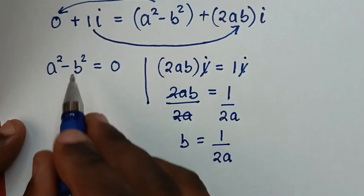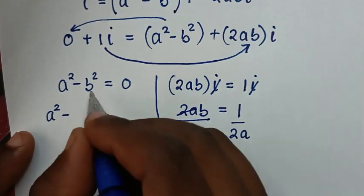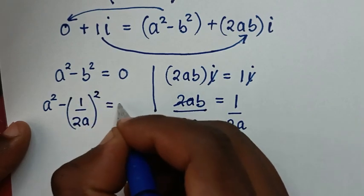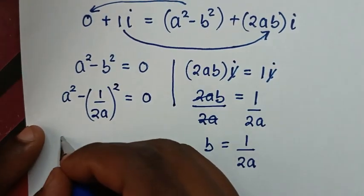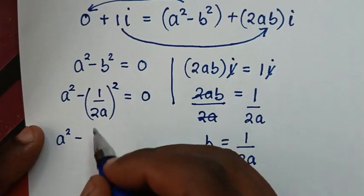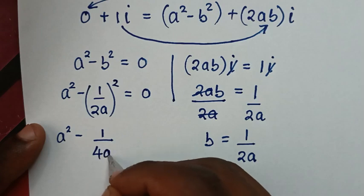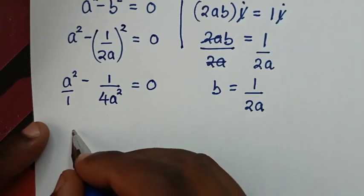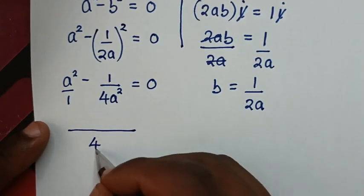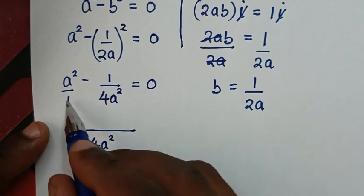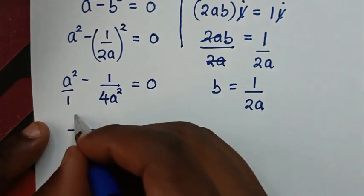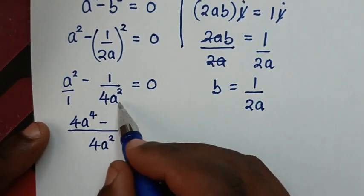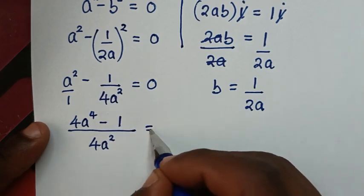Into this side we have b, so we substitute b = 1/(2a) into a² minus b² = 0. So: a² minus (1 over 2a)² is equal to 0. Then it will be a² minus 1 over 4a² is equal to 0.